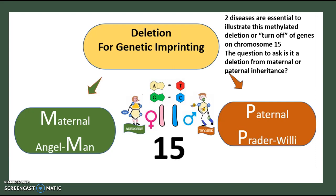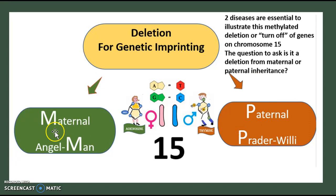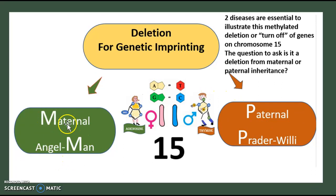We're going to have two different possibilities: either Prader-Willi syndrome or Angelman syndrome. You can easily distinguish — when it's paternal, there's going to be a P as there is in Prader-Willi syndrome. You can use that to associate, and for maternal Angelman syndrome, there's an M and an M. So Prader-Willi is for paternal and Angelman is for maternal.